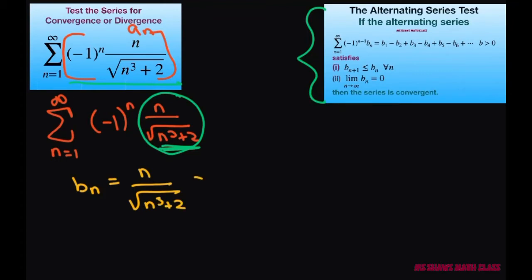That is positive — we need it to be positive — and that holds for n greater than or equal to 1. It is decreasing for n greater than or equal to 2, so we'll set it for that and let's look and see why.